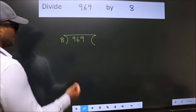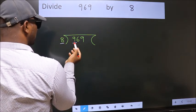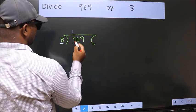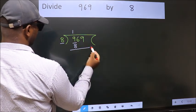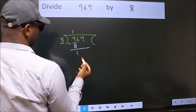Next, here we have 9, here 8. A number close to 9 in 8 table is 8 once 8. Now, we should subtract. We get 1.